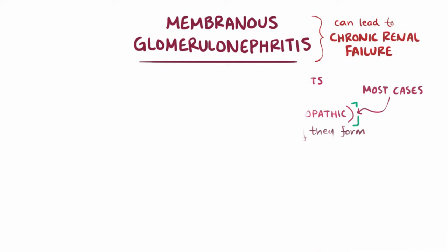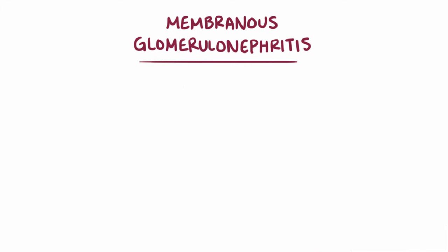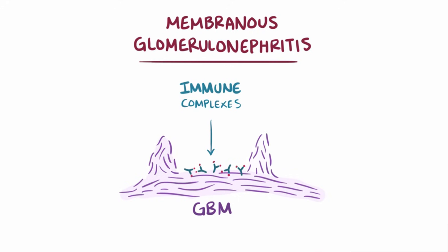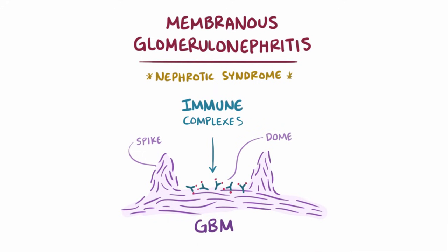As a quick recap, membranous glomerulonephritis is where immune complexes deposit in the GBM, which causes a thickening of that GBM and a spike-and-dome appearance that leads to nephrotic syndrome.